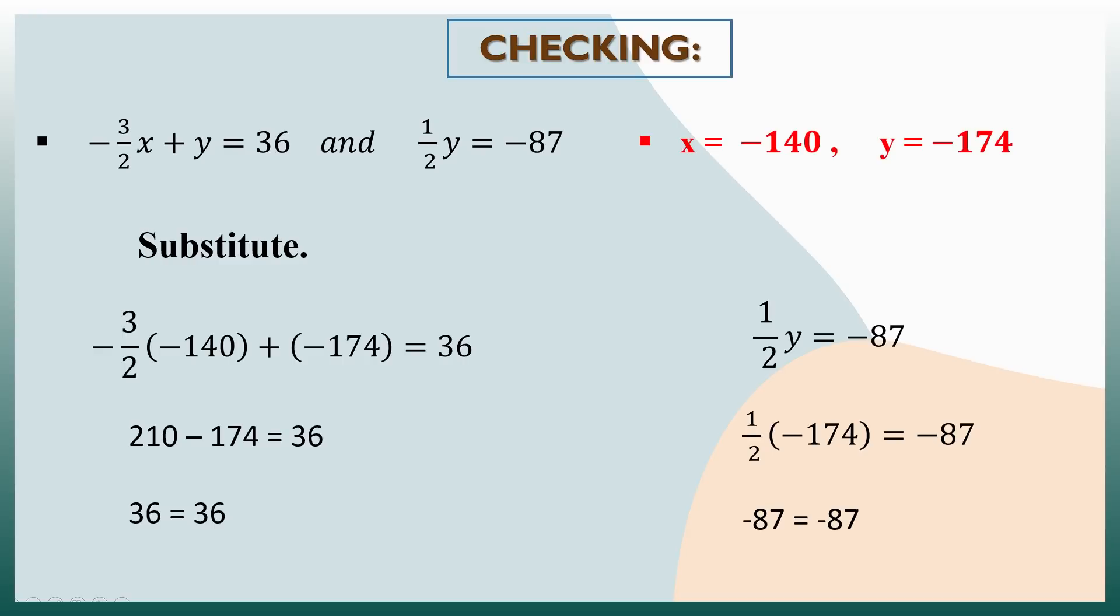Using equation 1, negative 3 halves times negative 140 plus negative 174 equals 36. 210 minus 174 equals 36. Therefore, 36 equals 36. Using equation 2, 1 half times negative 174 equals negative 87. Then, negative 87 equals negative 87.